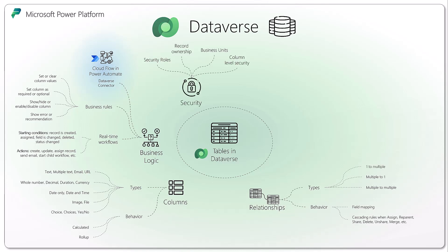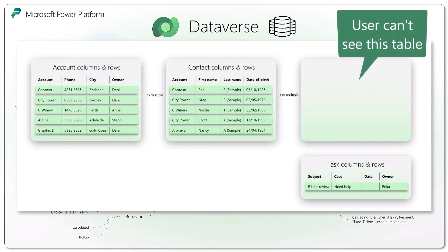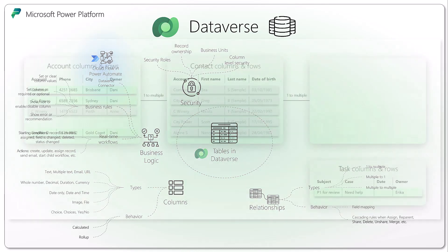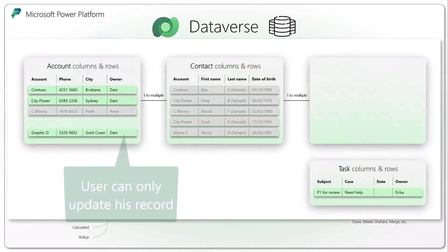Security — you can define, using security rules, which tables a user can see or can update, and so forth. You have record ownership, so each row within a table also has an owner. You can define that someone can read and update a specific row within a table — they can see the whole table and the data, but can only update certain rows where they're the owner.